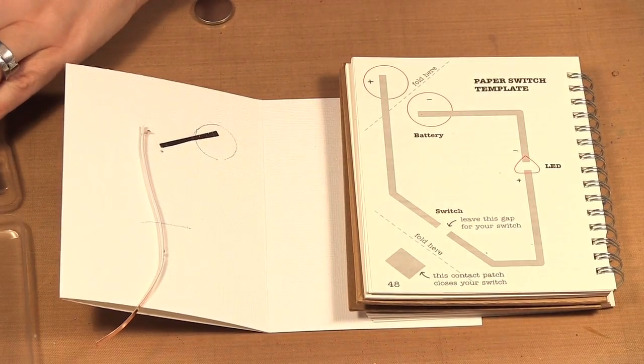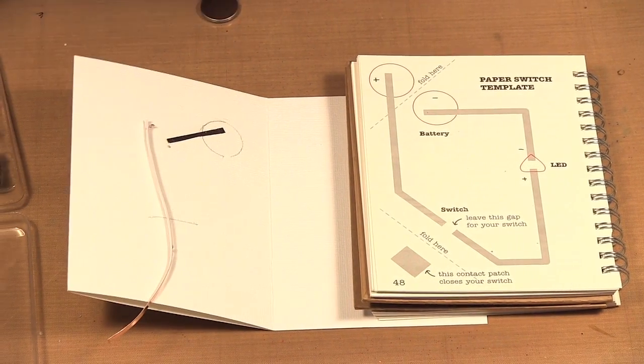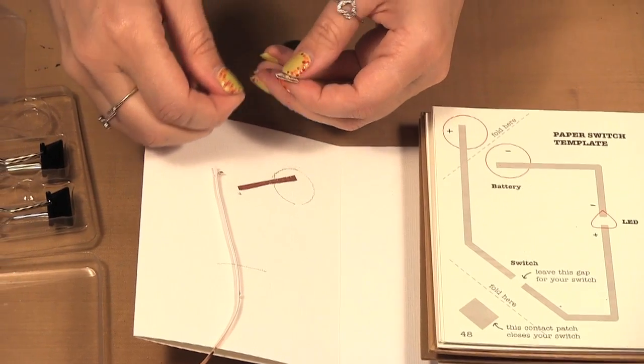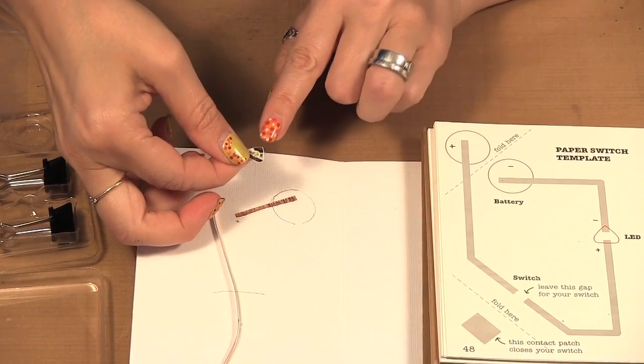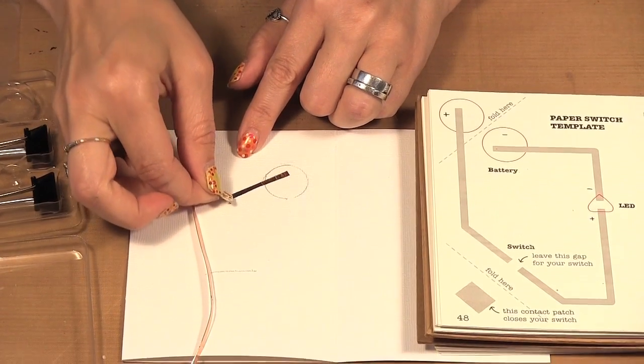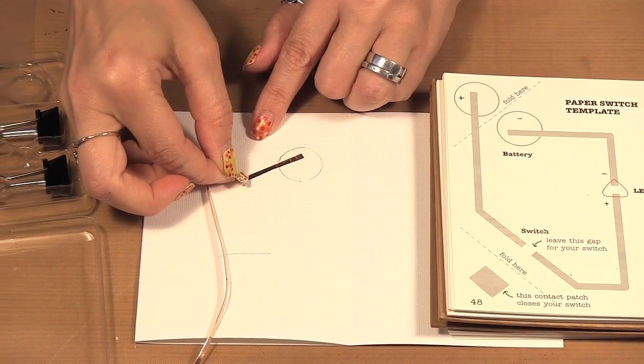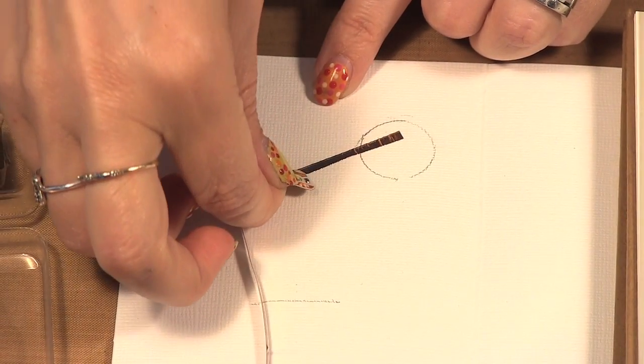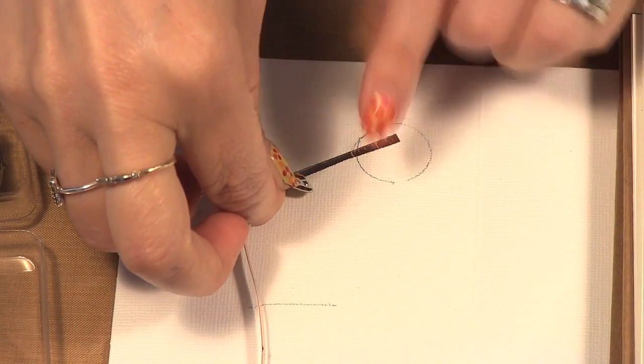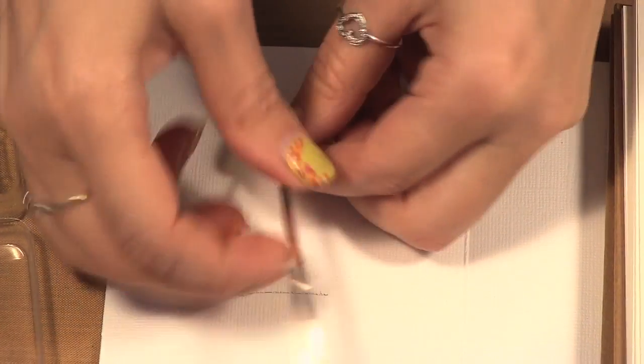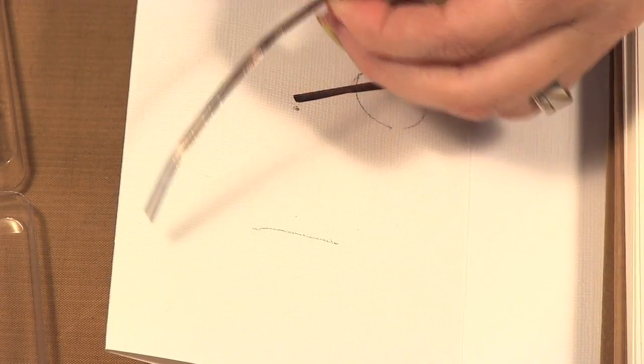So we get our little, this little tiny thing is our light and the point is the negative side and the long is the positive. So you have to see how this sort of connects on the page. So if I want the light there, I can maybe go straight down.